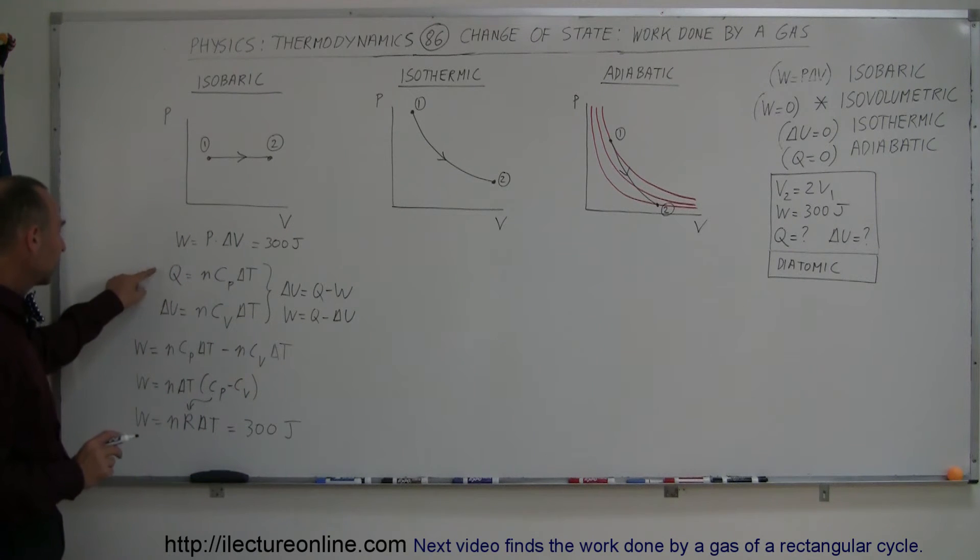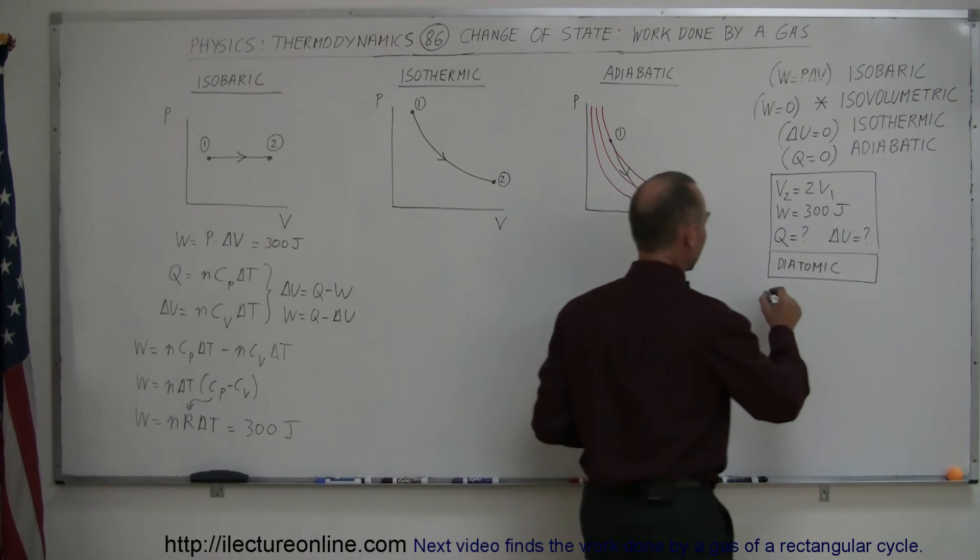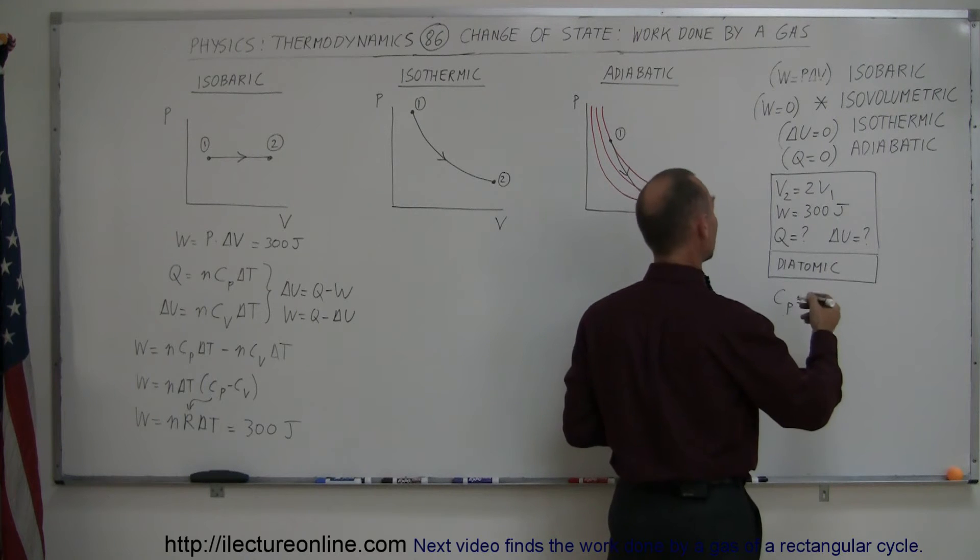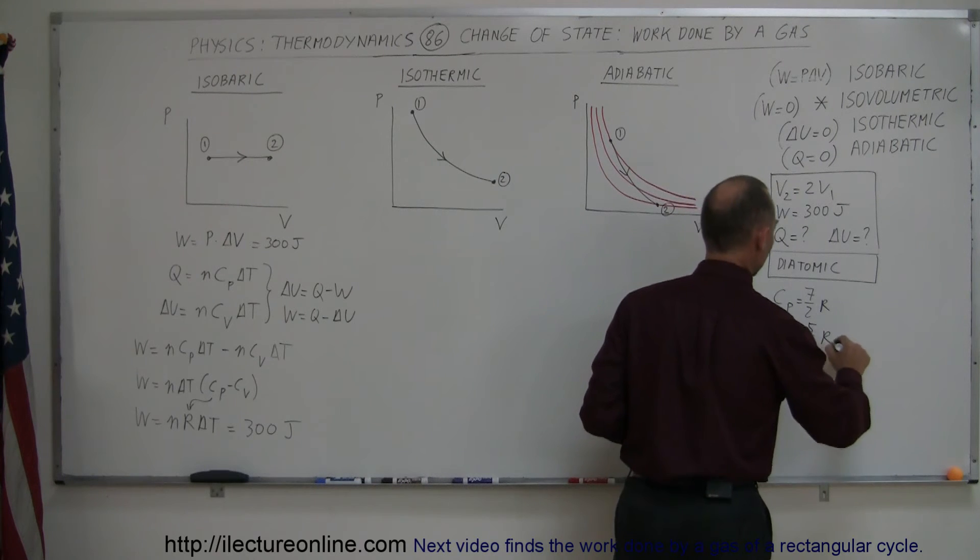Now, how do we then from that get to Q and delta U? Now, notice if I replace C sub P by, since we're diatomic, and let's split over here, in the diatomic gas, C sub P is equal to, not 5 over 2, but 7 over 2 R, and C sub V is equal to 5 over 2 R.